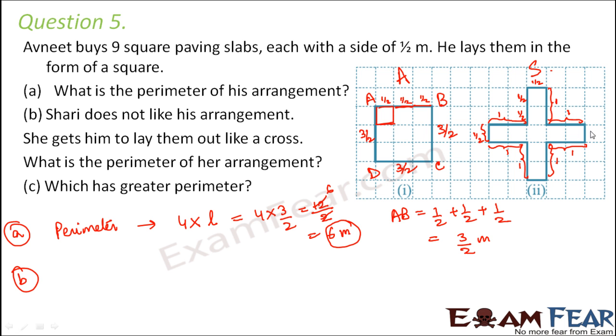This would be 1. And this would be half. This would also be half. And this would also be half. Now we need to add all of these together. So how many lengths do you have which are half? 1, 2, 3 and 4.